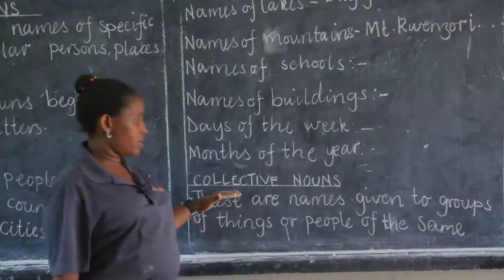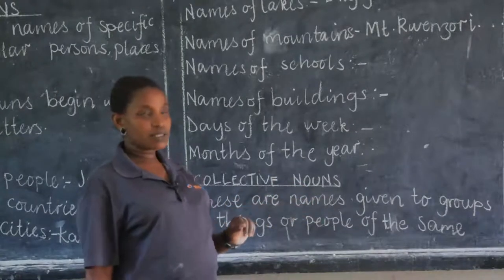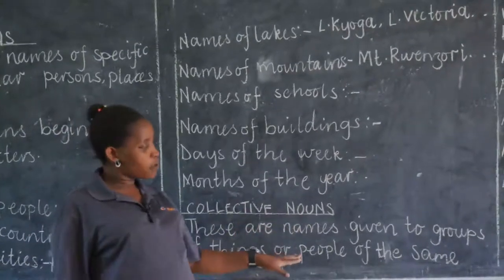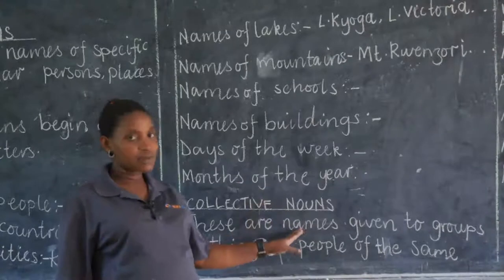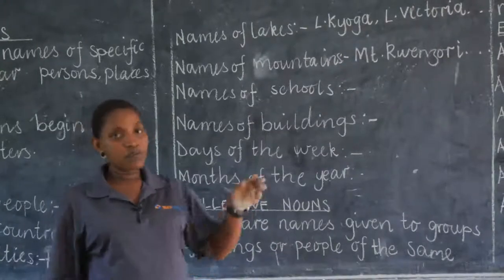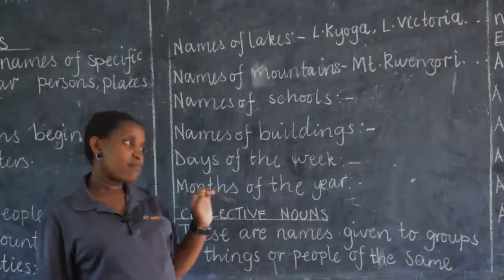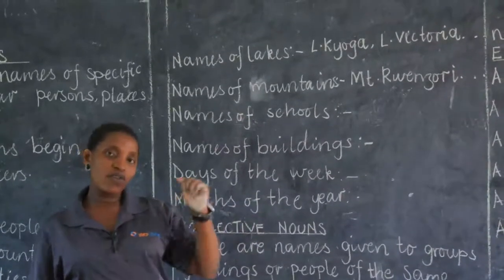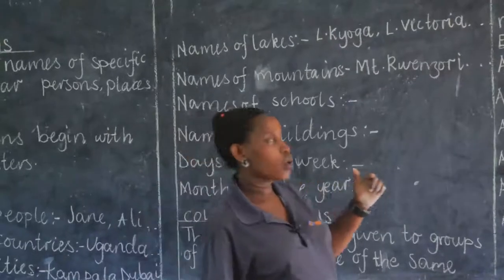So we come to another kind of nouns — the collective nouns. These are names given to groups of things or people of the same nature. When you put things of the same nature together, they have a collective name. There are very many collective nouns, and I'm going to mention a few of them now.